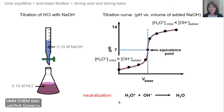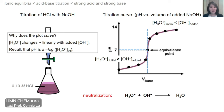Throughout this whole curve, we are performing the neutralization reaction. Depending on the ratio of hydronium ions to hydroxide, we could be in the acidic regime, the basic regime, or at the equivalence point at pH 7. The plot curves because even though the concentration of hydronium ion changes approximately linearly as you add base, pH is not proportional to hydronium concentration — rather, it's equal to the minus log of the concentration.